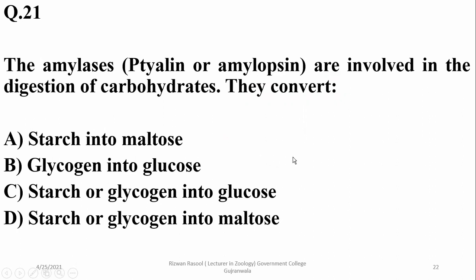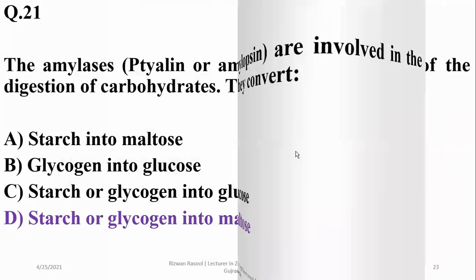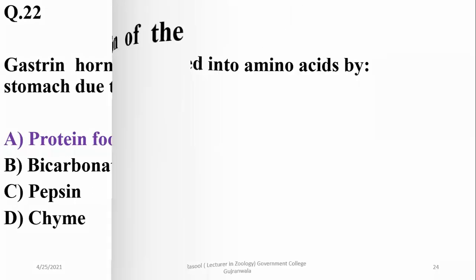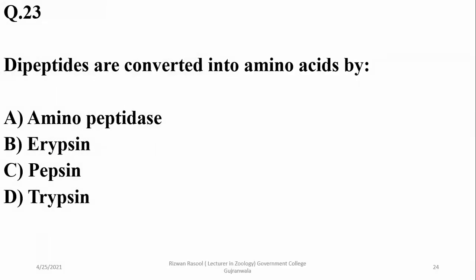Amylase — also called ptyalin or amyloxin — is involved in the digestion of carbohydrates, converting starch and glycogen into maltose. So the answer is delta. Gastric hormone (gastrin) is produced by the pyloric region of the stomach due to stimulation from protein food, so alpha.